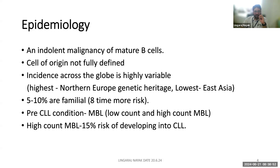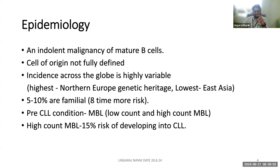MBL, or monoclonal B lymphocytosis, is a pre-CLL condition. When the lymphocyte count in peripheral blood is less than 5,000, it is labeled as MBL. When it is more than 5,000, it is called CLL. So 5,000 absolute lymphocyte count is the cutoff for diagnosing CLL.